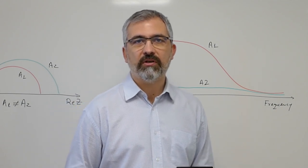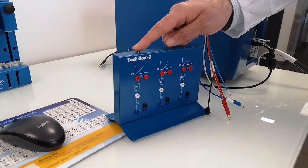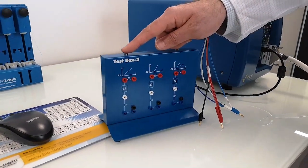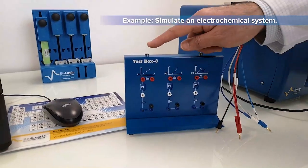Let's do a real measurement now. I will run two impedance measurements at two different amplitudes on a non-linear circuit of the text box 3 that we mainly use for teaching results. I will take circuit number 2 which simulates a simple electrochemical system.